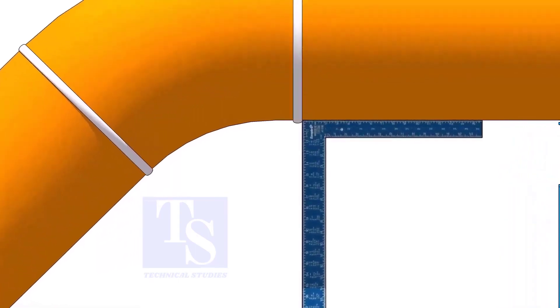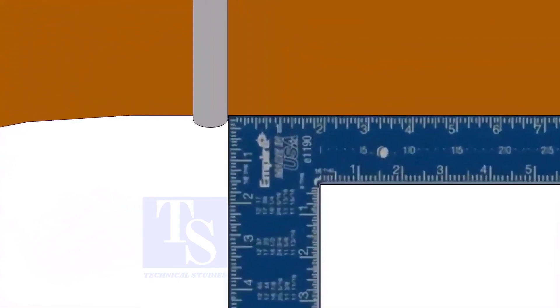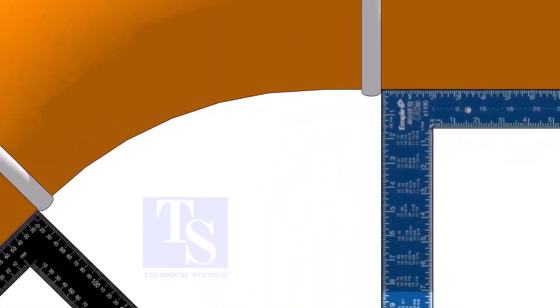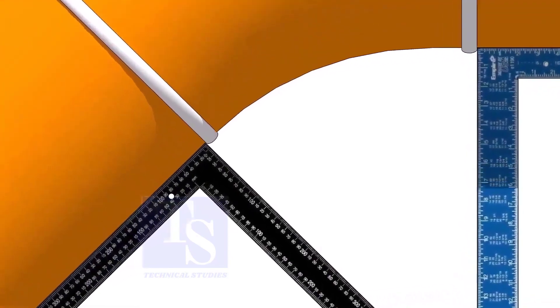Hold one right angle on the pipe just outside the weld joint, as shown. Hold another right angle on the other pipe. Make sure both right angles are sitting on the center of the pipe.